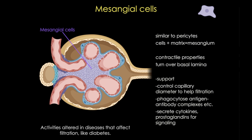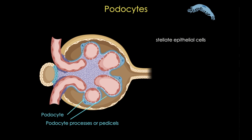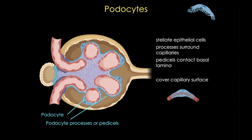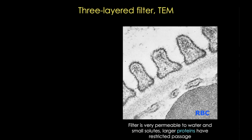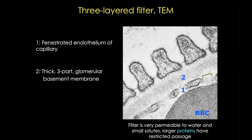Now let's take a closer look at the podocytes, which form processes around the capillaries covering their surface as part of the filtration apparatus. The filter apparatus consists of three layers: the fenestrated endothelium of the capillary, where fenestrations are windows allowing some substances to move in and out; a thick three-part membrane called the glomerular basement membrane, formed from the fused basal lamina of the capillary endothelial cell and the podocytes, which is the most substantial part of the filter; and finally filtration slits between each pedicel, each with a slit diaphragm that helps control what gets through. Together these three components control filtration.